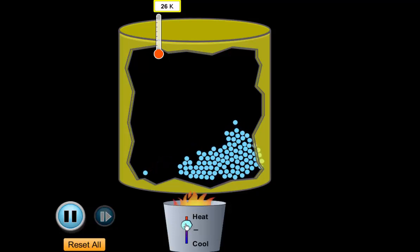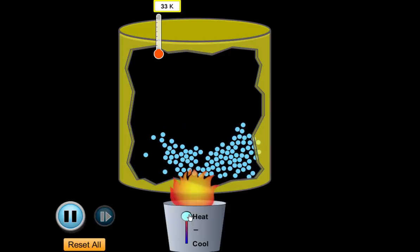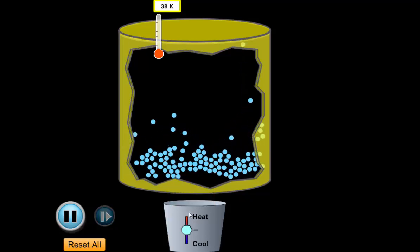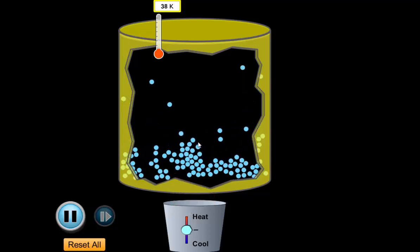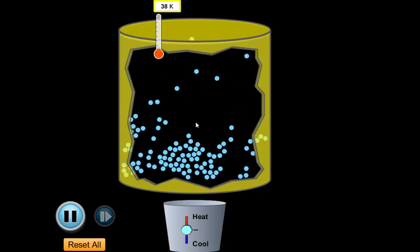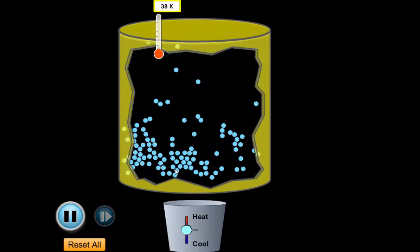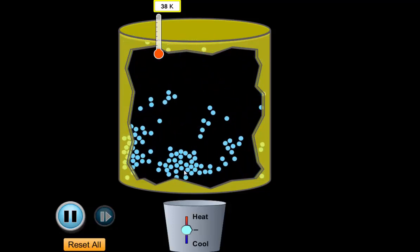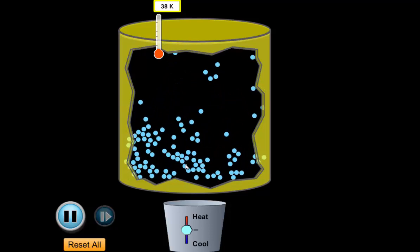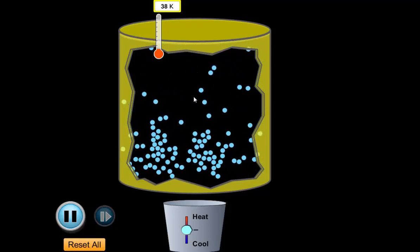Now I can add a little bit more heat to get it moving a little bit faster, and now these particles are starting to change from a liquid into a gas. They're starting to bounce around all over the place. Again, I haven't changed the attractive forces between them — all I've done is given them enough energy to break free of those attractive forces.